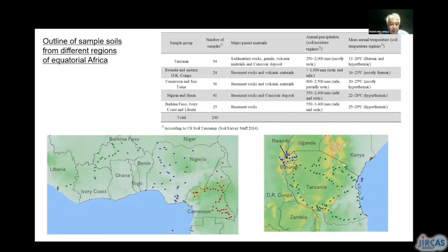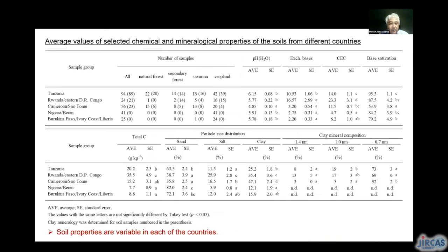Since the 1970s, our laboratory has analyzed soil samples in the area, and I tried to summarize this accumulated data all together. This is a list and location of sample soils. Soil properties are variable in each of the core countries, and we can find a rough trend of soil properties. For example, the soils in Cameroon are more acidic, or the soils in Nigeria or Burkina Faso are more sandy than others.